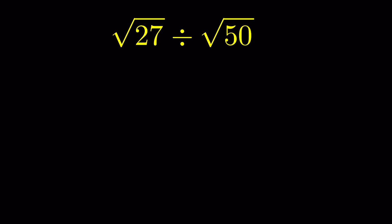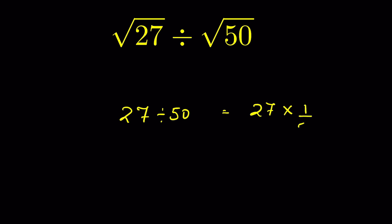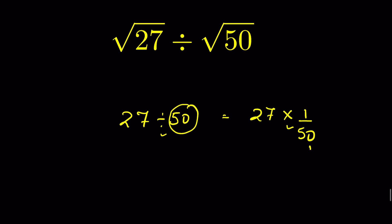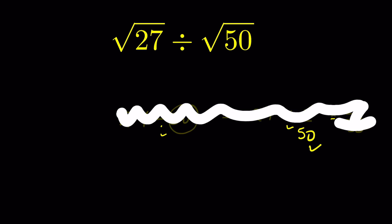Square root of 27 divided by square root of 50 — how do we divide radicals? If it was simple division, like 27 divided by 50, we convert division into multiplication and the number after that gets inverted, so it equals 27 upon 50. But here 27 and 50 are under roots, so how do we solve it?